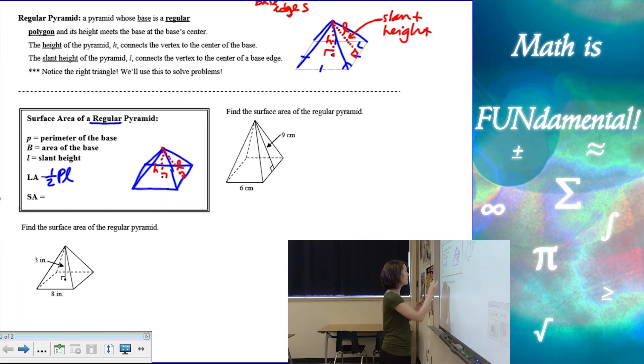Now the surface area is going to be that area of all the lateral faces plus the area of the base. Now in this case, it's a square. That's a little easier, but later it's going to get a little more complicated. Let's look at an example.